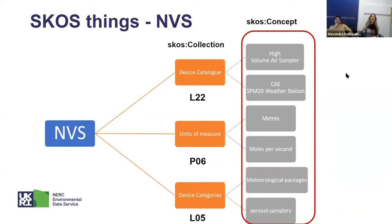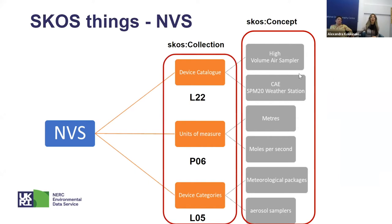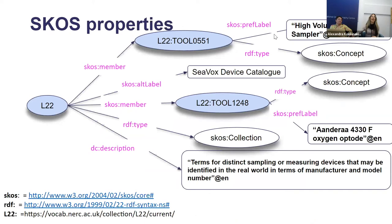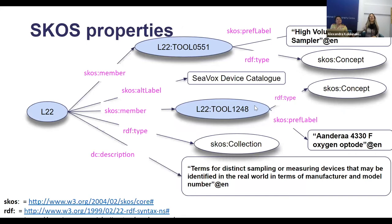The things described in NVS are SKOS concepts, like high volume air samplers, CAE weather station, meters, moles per second, etc. These SKOS concepts are grouped into collections, like the device catalog L22, or the units of measure P06, or the device categories L05. Currently, NVS counts 290 collections and over 325,000 concepts. This is an RDF graph of how things in NVS look like — for example, L22 is a SKOS collection with a certain description, an alternative label, and two members, both of which are concepts with their own preferred labels.